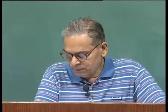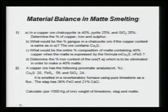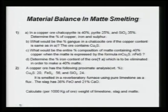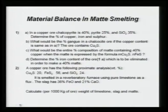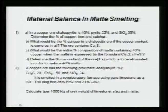Problem number 2 says a copper ore has the following proximate analysis — representing the analysis of minerals: Cu₂S, FeS₂, and SiO₂. It is smelted in a reverberatory furnace using pure limestone as a flux. The slag has 36 percent FeO and 21 percent CaO. Calculate per 1000 kg of ore the weight of limestone, slag, and matte.